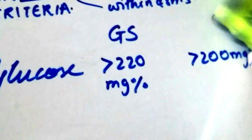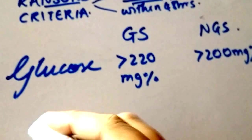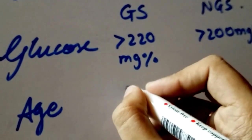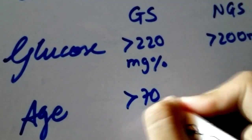I'm just gonna shift it in the frame. A stands for age. And in gallstone pancreatitis, if it's greater than 70 years.